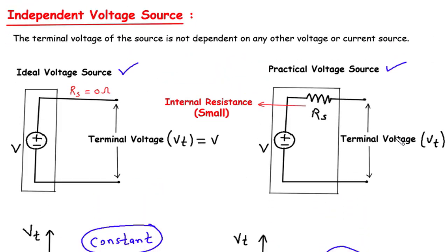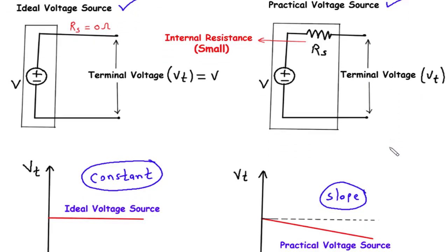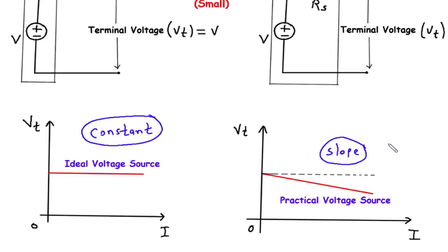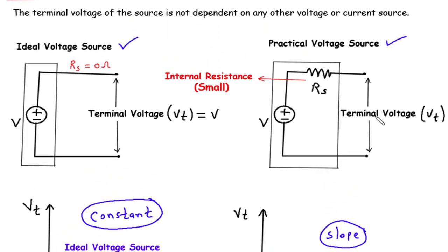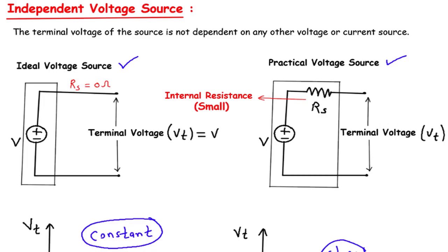While an ideal voltage source is a theoretical concept with zero internal resistance and a constant terminal voltage, practical voltage sources have internal resistance that causes a slight decrease in the terminal voltage as the current increases. Understanding the characteristics of these voltage sources is crucial in circuit analysis and design, as it allows us to account for the real-world behavior of electrical components and systems. Thank you for watching, and stay tuned for more educational videos on electrical engineering concepts.